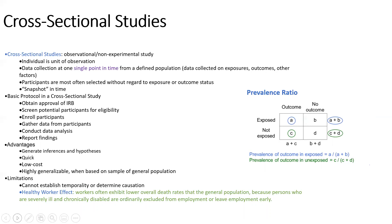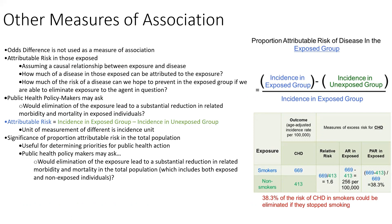Another measure of association is attributable risk, which is important for policymakers. For example, it can approximate how much cancer would be eliminated if smoking were eliminated — though cancer wouldn't disappear entirely.